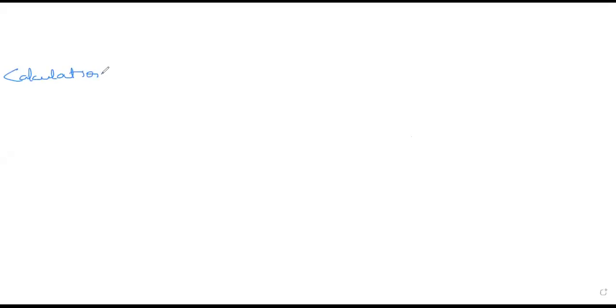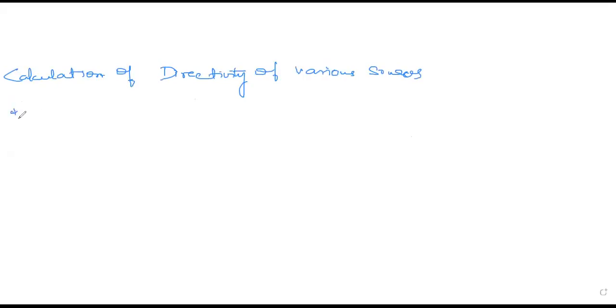Next we have certain problems which are related to directivity, where you will be studying about the unidirectional pattern and the bidirectional pattern. This is called the calculation of directivity of various sources — you need to find out what is the directivity of the sources given.